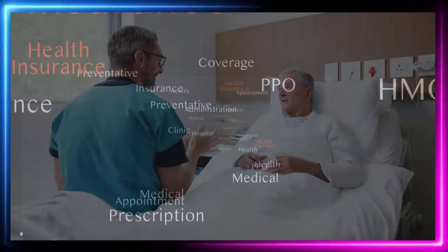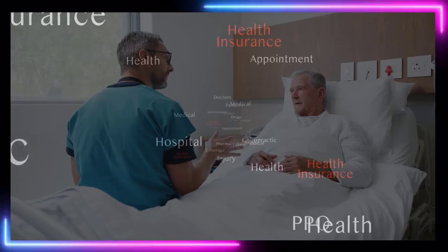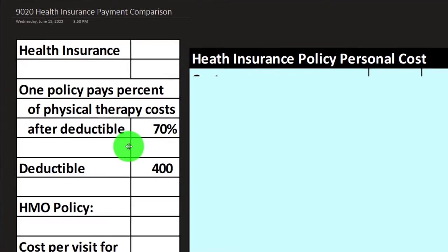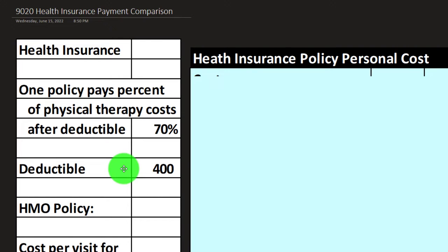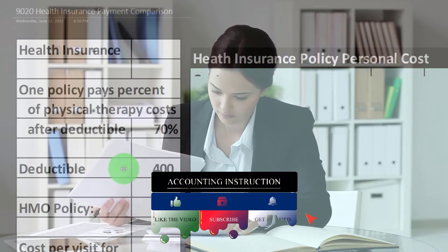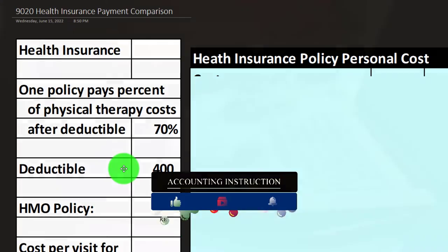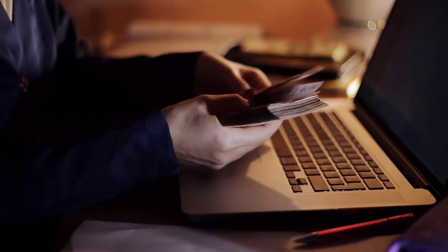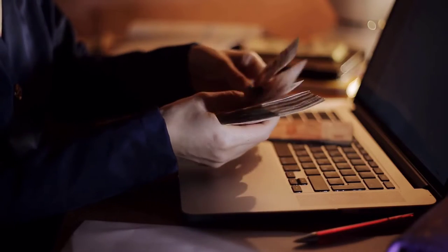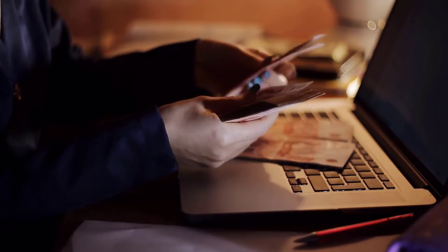We'll be imagining two different health insurance policies and how they might differ in terms of the payout for a particular claim. The first policy pays 70% of physical therapy costs after a deductible of $400. Remember, the deductible works a bit differently in health insurance compared to property insurance. With property insurance, the deductible is the amount you pay and everything above that is covered. With health insurance, you clear the deductible, then still pay a percentage above it, with the insurance company paying a percent and a max out-of-pocket cap on top of that.